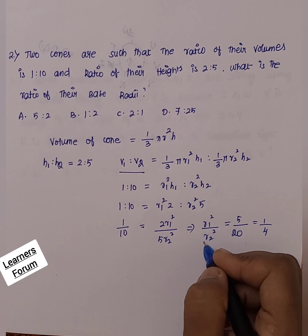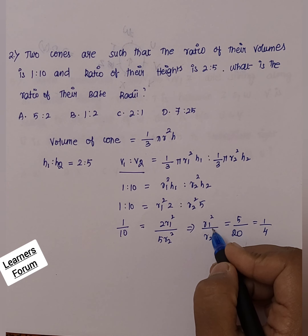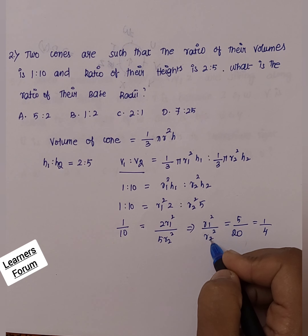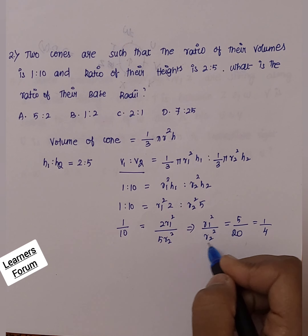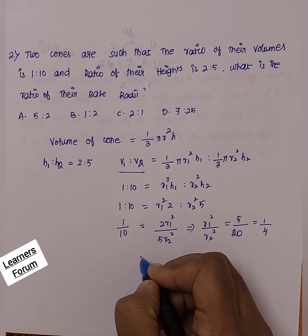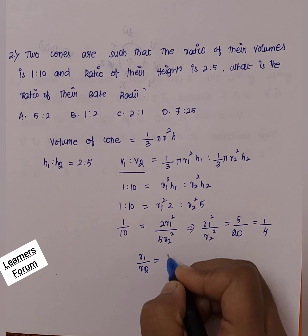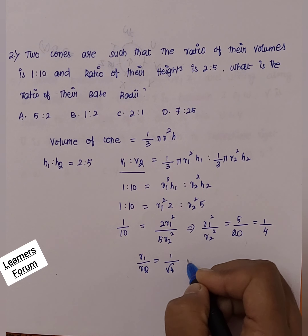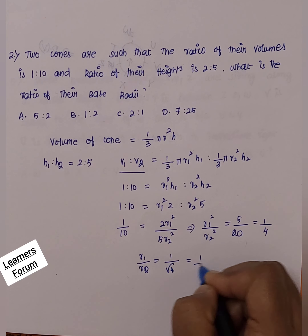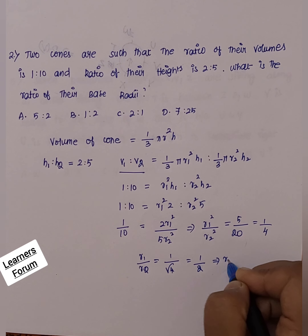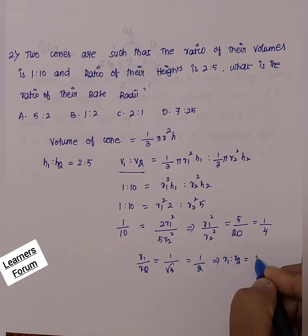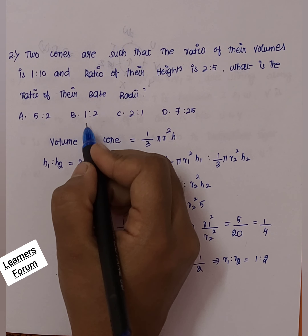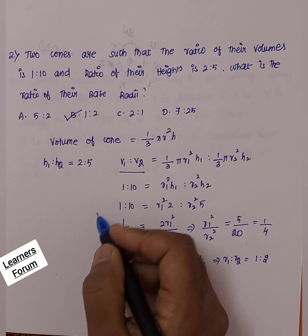We need to find the ratio of base radii R1 to R2. Since we have the squared values, taking the square root we get R1 divided by R2 equals 1 by the square root of 4, which is 1 by 2. This means R1 to R2 is equal to 1:2. This answer is available under option B, which is our correct answer.